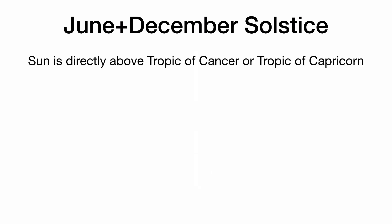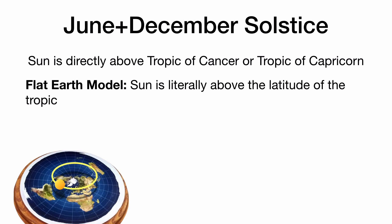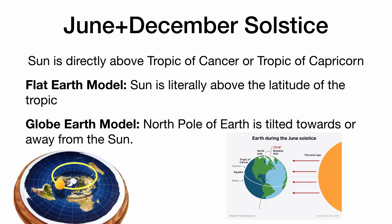June and December solstice — what do the solstices mean? The sun is directly above the Tropic of Cancer or the Tropic of Capricorn in either the June or December solstice. In the flat Earth model, the sun is literally above the latitude of that tropic. In the globe Earth model, the North Pole is tilted either towards or away from the sun — here illustrating the June solstice, where the sun is directly above the Tropic of Cancer.